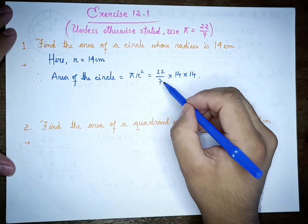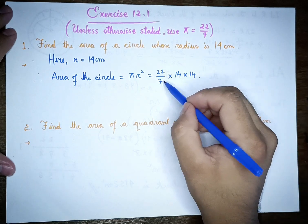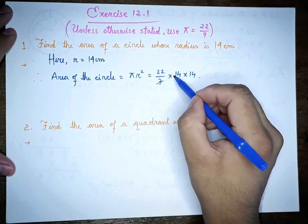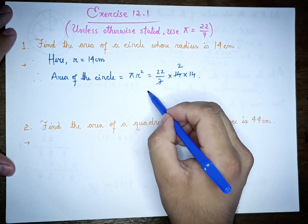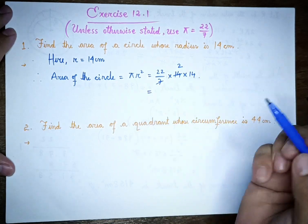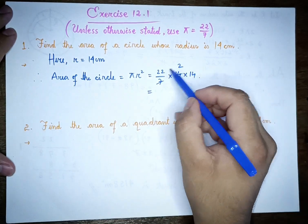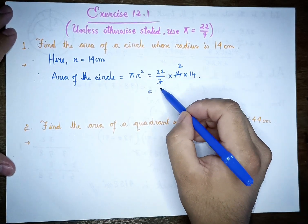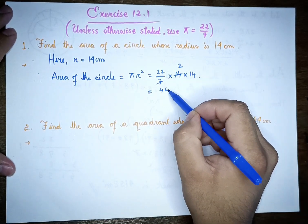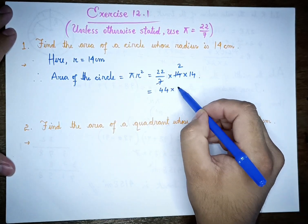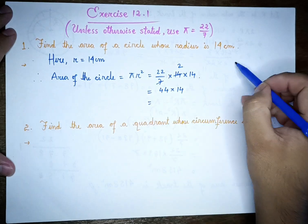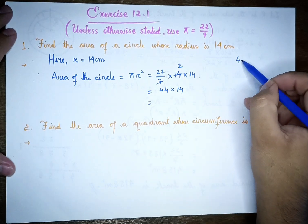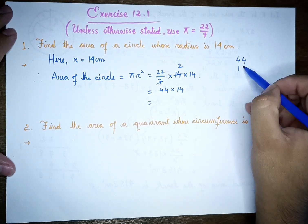The area of circle is 22 by 7 multiplied by 14 into 14, which gives us 44 into 14.